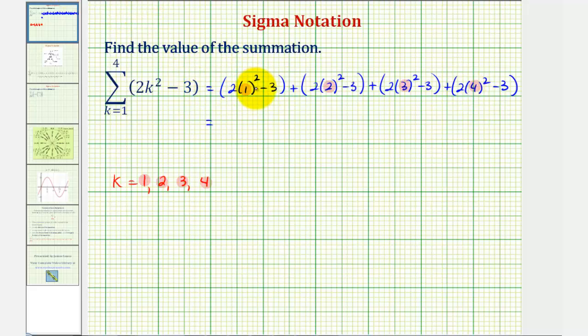So for this first expression here, we have one squared, that's one, times two is two, minus three, that's negative one, plus next we have two squared, that's four, times two, that's eight, minus three is five.